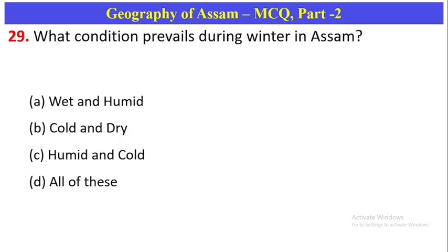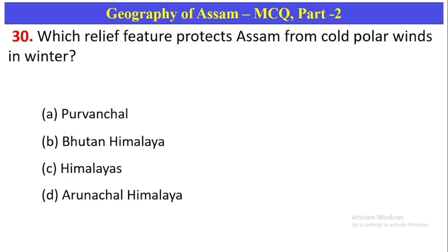What condition prevails during winter in Assam? In winter the condition here is cold and dry. Options given are: wet and humid, cold and dry, humid and cold. Option B — cold and dry — is correct. Which relief feature protects Assam from cold polar winds in winter? The Himalayas protect Assam from cold polar winds. Option C is correct.